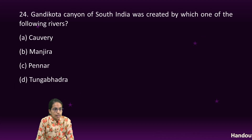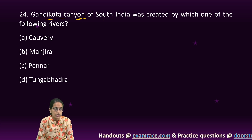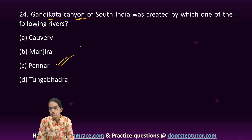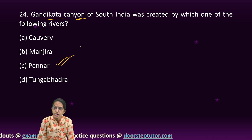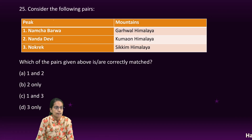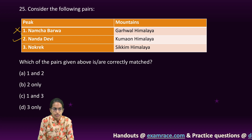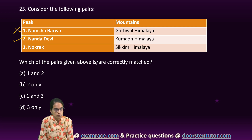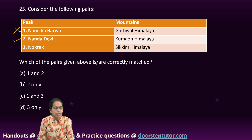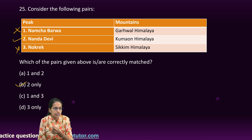The next question is on Gandhikota Canyon, also called one of the hidden grand canyons of India, located on the Penna River in the Kadapa district of Andhra Pradesh — so C is the right option. Importantly, Namcha Barwa is in Arunachal Pradesh, making that an incorrect match. Nanda Devi and Sunanda Devi are both in the Kumaon mountains — that is correct. Nokrek is in Meghalaya, making that incorrect. So Nanda Devi — two only — is the correct option.